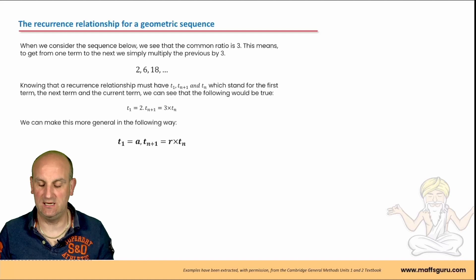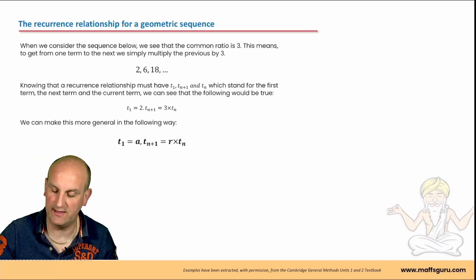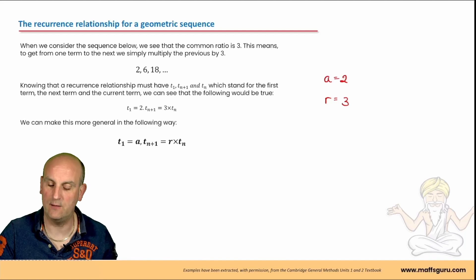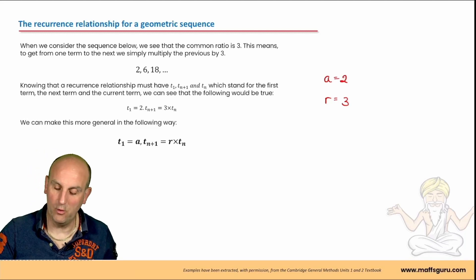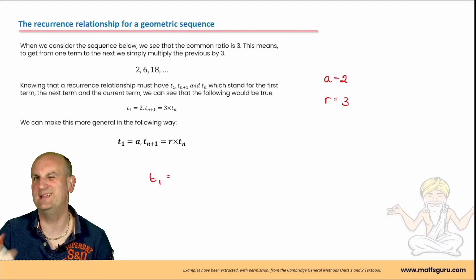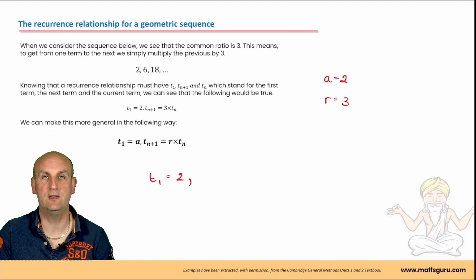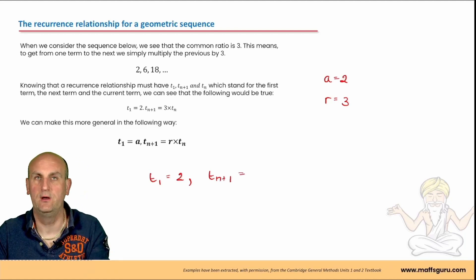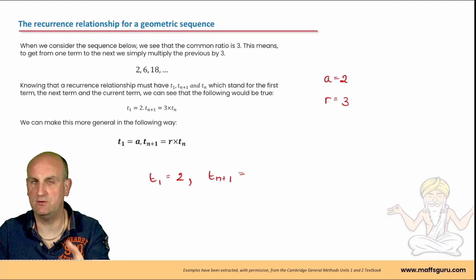For a geometric sequence we do this in exactly the same way — we always start with our first term. Looking at the sequence 2, 6, 18: my first term a equals 2. The common ratio r: 6 divided by 2 gives 3, and checking 18 divided by 6 also gives 3. So t1 equals 2. Now we write t(n+1) equals — and for a geometric sequence we multiply by the common ratio, which is 3.